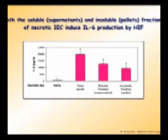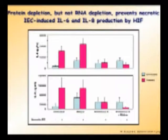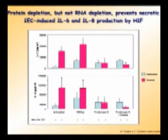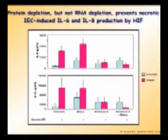We then asked whether this activity was in the soluble fraction or the insoluble fraction. At this level, both the soluble fraction and the supernatants of the pellets appeared to do it, but the soluble fraction was always more powerful. This work is by Ellen Stigliano and Melania Scarpa, my associates. We then asked what in the supernatant is responsible for inducing pro-inflammatory cytokine production.